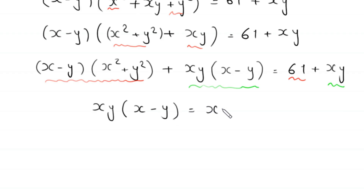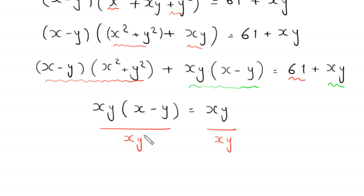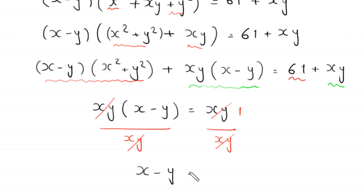From here we divide both sides of this equation by xy. At the right hand side we divide by xy, so this xy will cancel with this xy, and this xy will cancel with this xy. Here we are left with 1, so this equation will become x minus y is equal to 1.